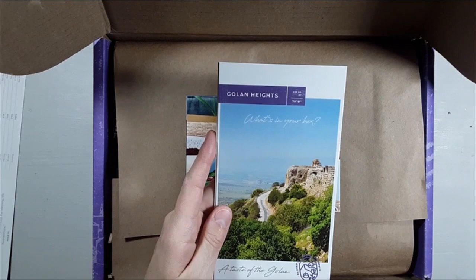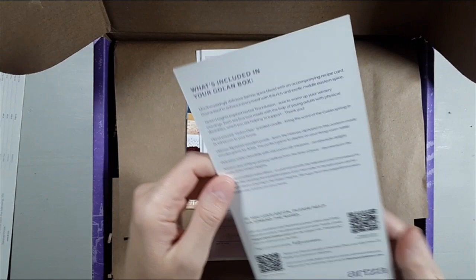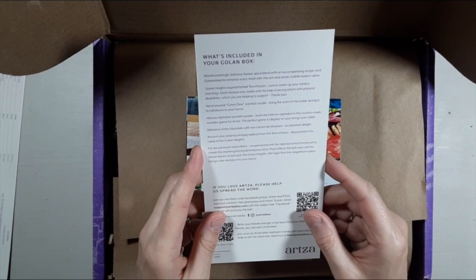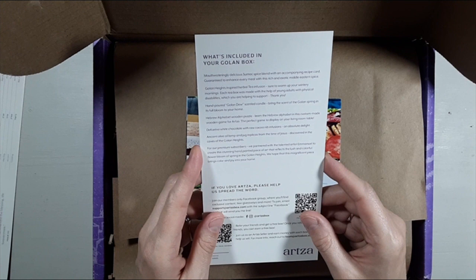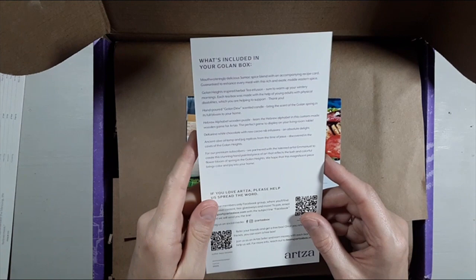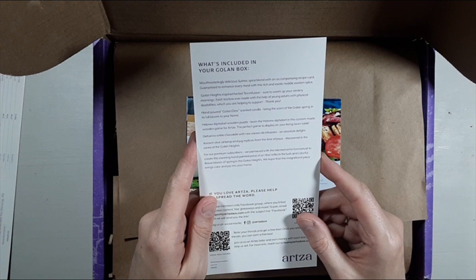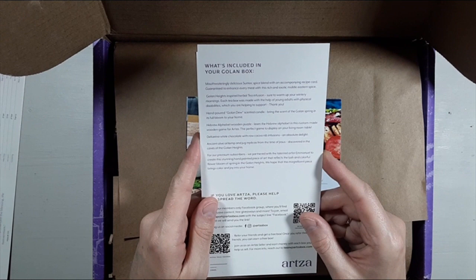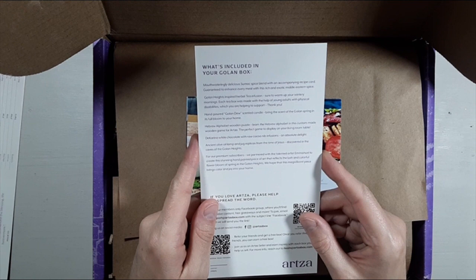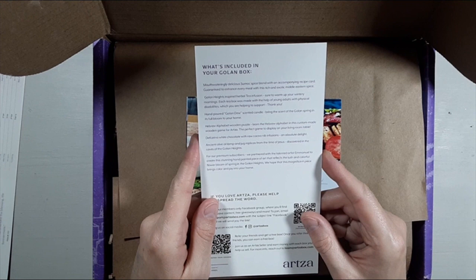Let's take a look here. This says Golan Heights, what's in your box. A taste of Golan: what's included in your Golan box? Mouth-wateringly delicious sumac spice blend with accompanying recipe card, guaranteed to enhance every meal with this rich and exotic Middle Eastern spice. Golan Heights inspired herbal tea infusion, sure to warm up your wintry mornings. Each tea box was made with the help of young adults with physical disabilities, which you are helping to support. Hand-poured Golan Dew scented candle, bring the scent of the Golan spring in its full bloom to your home. Hebrew alphabet wooden puzzle, learn the Hebrew alphabet in this custom-made wooden game for Artsa, the perfect game to display on your living room table.